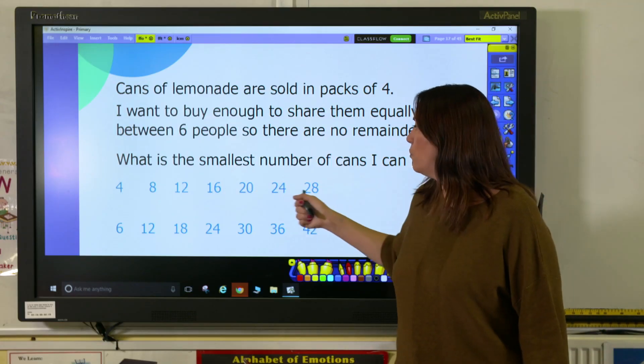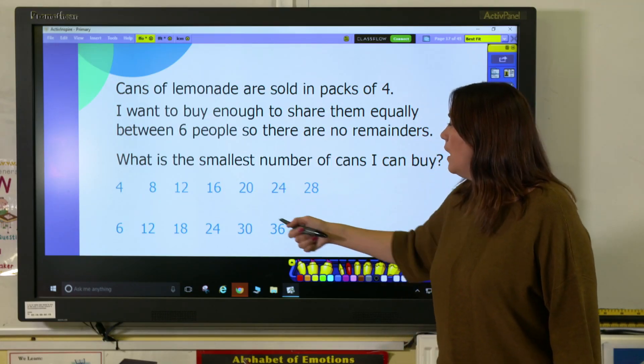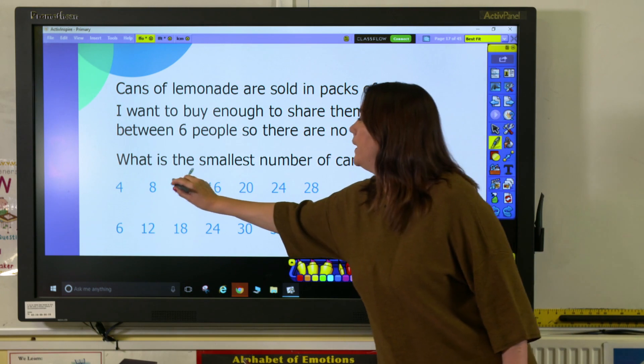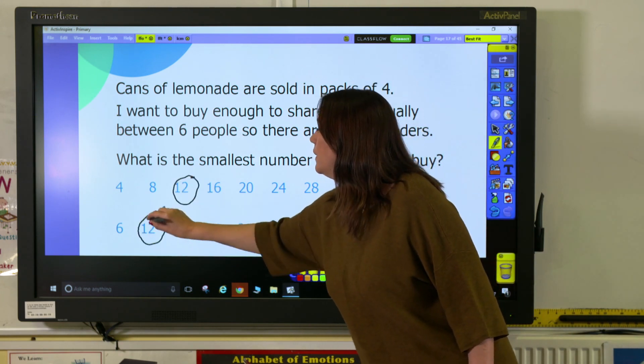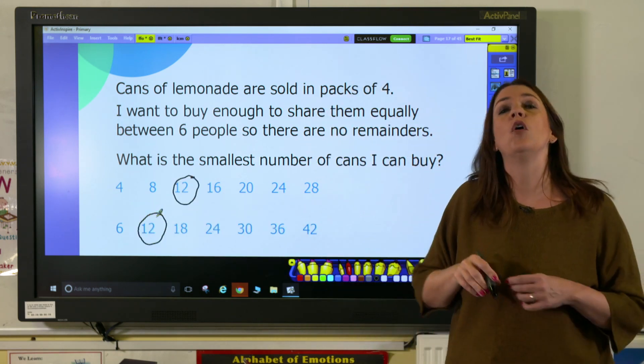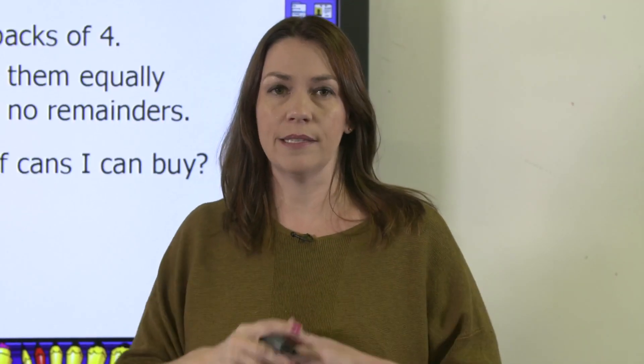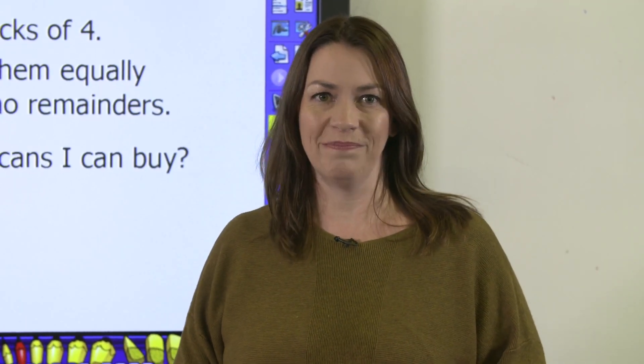So here, multiples of 4 are written out and so are 6. And we can see that our common multiple here is 12. If the cans come in packs of 4, then we need to buy 3 packs. So there you go. That's finding the lowest common multiple.